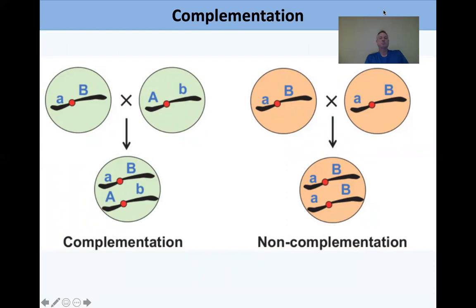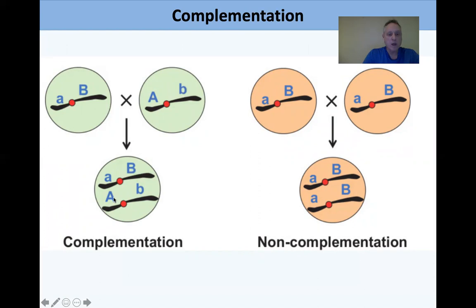Complementation is an important concept. If two cells — these could be spores — each carry little-a big-B and big-A little-b respectively, then by mating them you combine big-A and big-B in one cell, complementing the dominant traits. But if you cross little-a big-B with little-a big-B, you're still homozygous recessive for the trait conferred by A, so they do not complement.